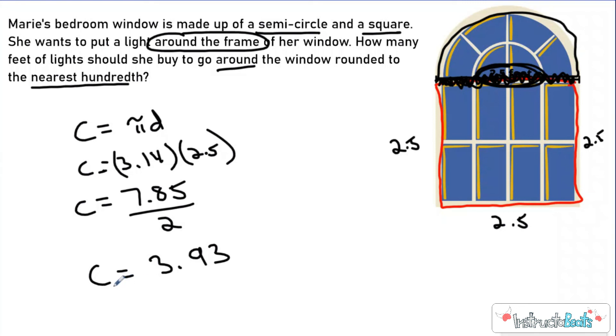So this is the circumference of the top part of my window. Now if I add these three numbers together, that should be 7.5. Or the perimeter of this bottom part is 7.5. When I add those together, the total amount of lights you should buy to go all the way around the window is 11.43 feet, and that is how many feet of lights she would need.